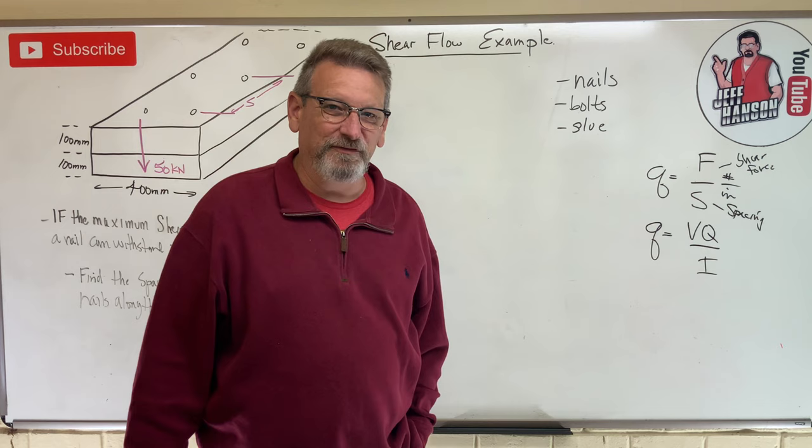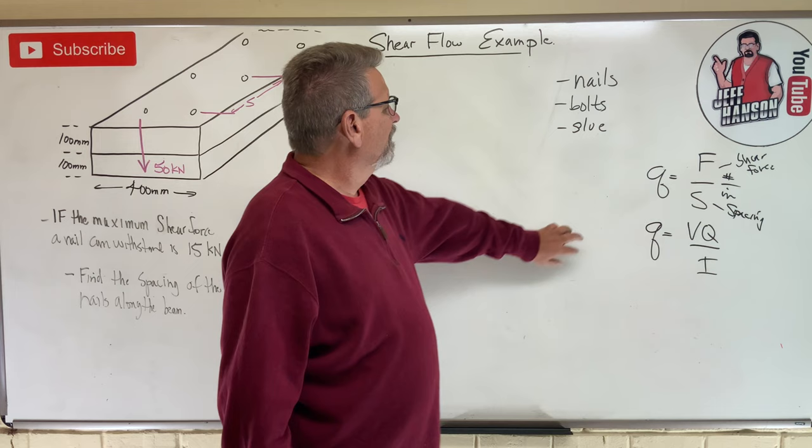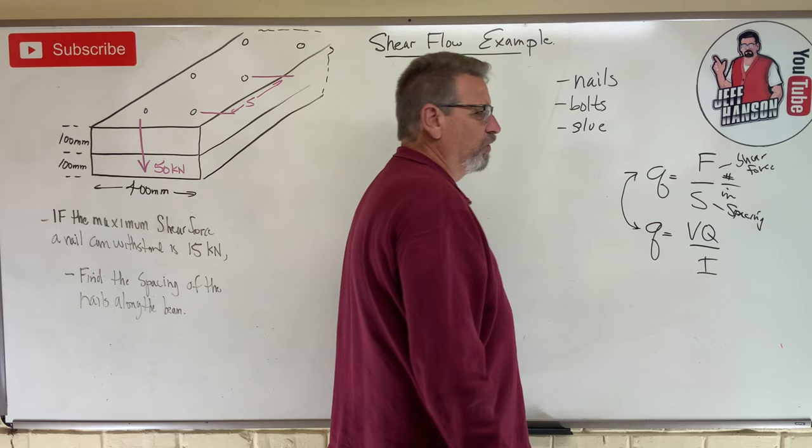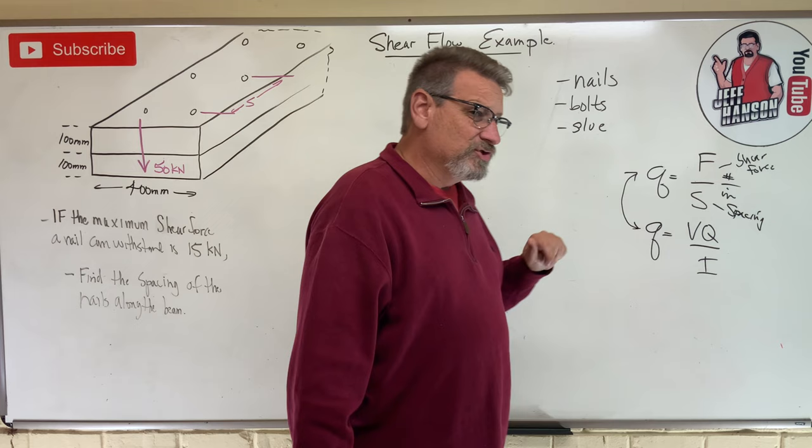Vq over I, the Vicky equation. Not the Vick-it equation, that was tau equals Vq over It. But this is another thing. So this little q is equal to that one, and this is shear flow. This is a way to calculate the distance between fasteners.